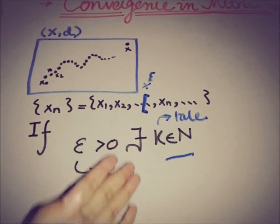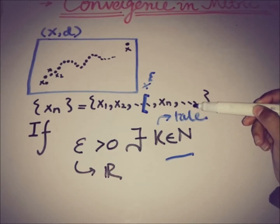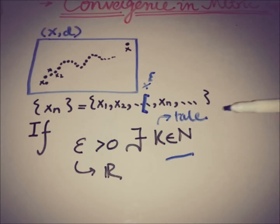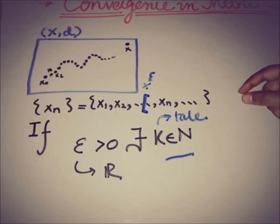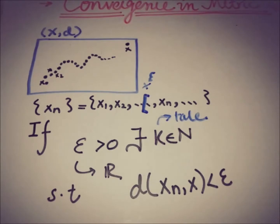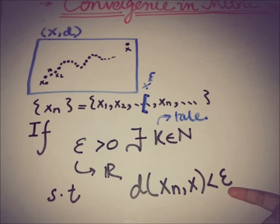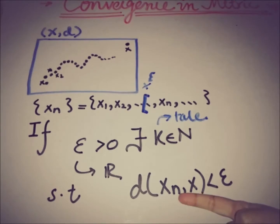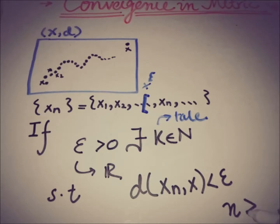Let's say we have a tail at xm. This tail says that every element after this tail — the distance of every element with the limit x — must be less than epsilon, which is a real number greater than zero. Since we are in a metric space, the metric d(xn, x) must be smaller than epsilon. The elements xn are taken where n is greater than k.